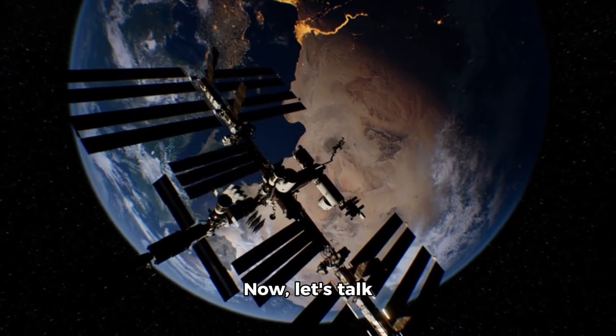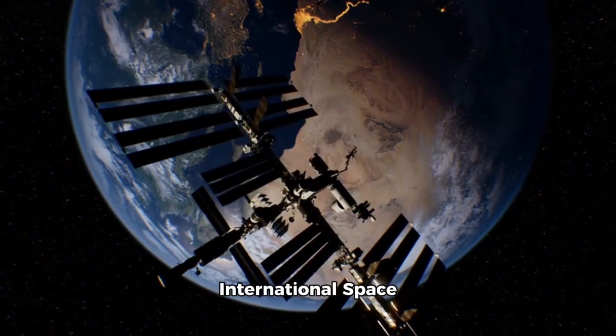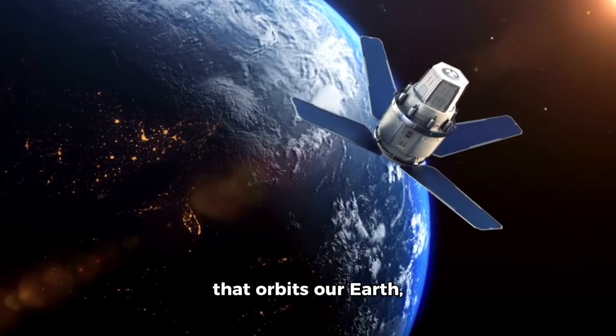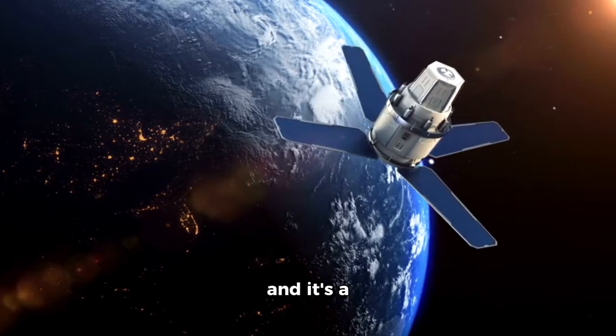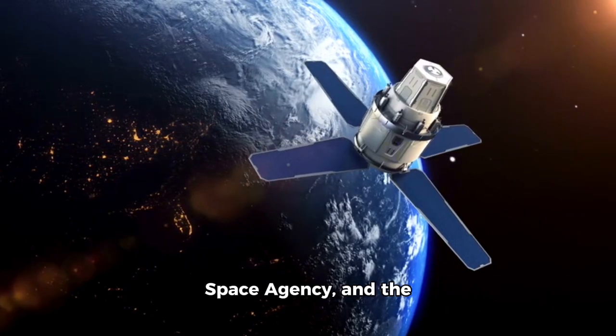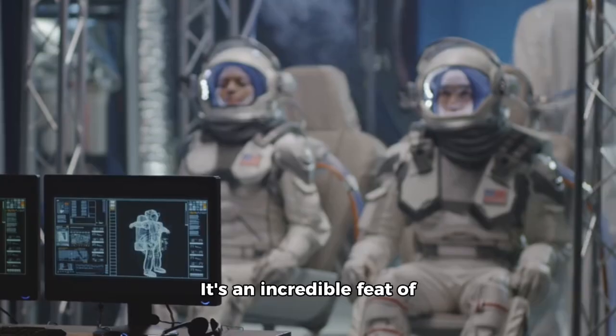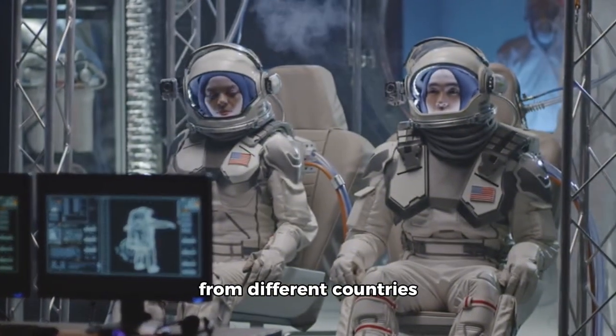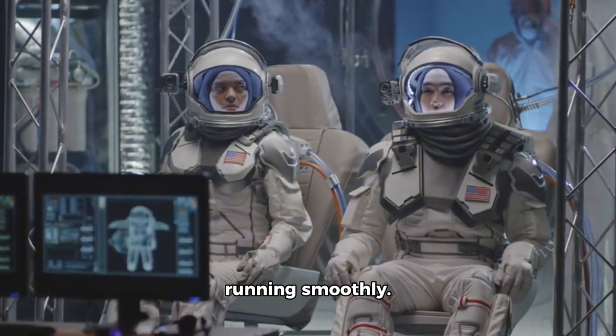Now, let's talk about the International Space Station, or ISS for short. This is a spacecraft that orbits our Earth, and it's a collaboration between NASA, the European Space Agency, and the Russian Space Agency. It's an incredible feat of engineering, and astronauts from different countries work together to keep it running smoothly.